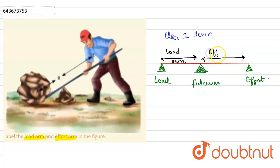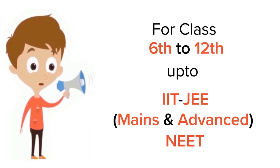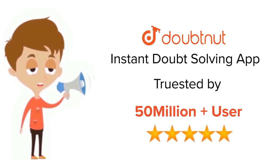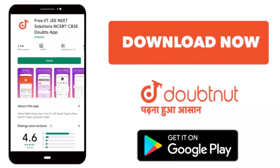And on the right hand side will be the effort arm. I hope you have understood this well. For class 6 to 12, JEE and NEET level, trusted by more than 5 crore students, download Doubtnet app today.